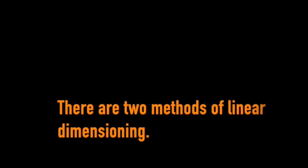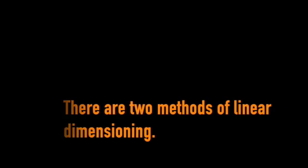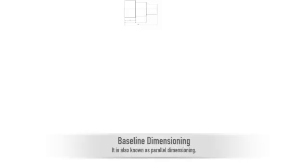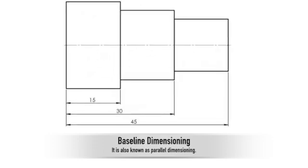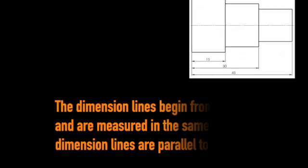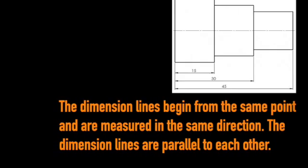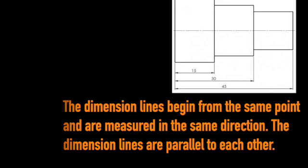There are two methods of linear dimensioning. Baseline dimensioning, also known as parallel dimensioning. The dimension lines begin from the same point and are measured in the same direction. The dimension lines are parallel to each other.